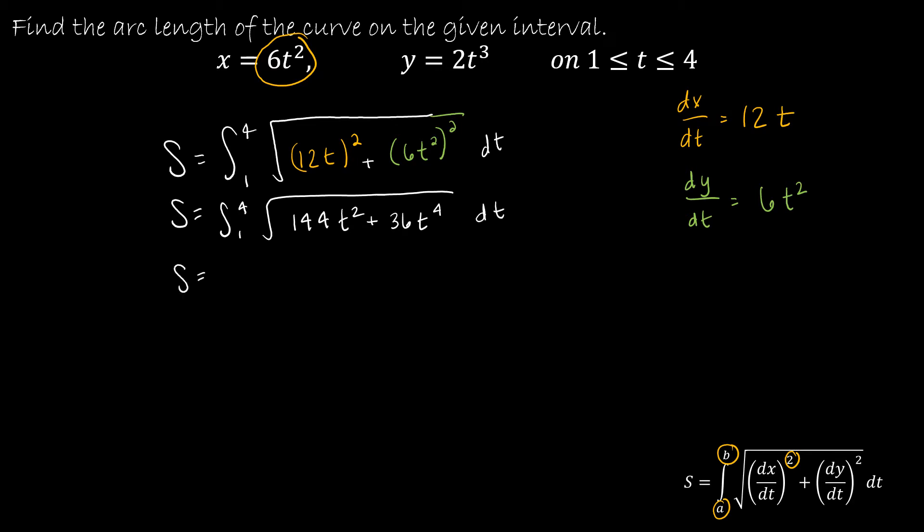Doing just a little bit of simplification, I can factor a 36t² out of both terms. And that leaves me with 4 and t².